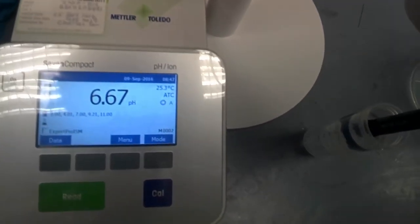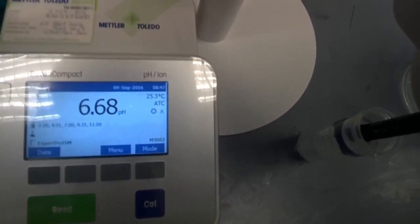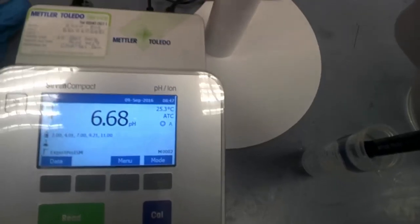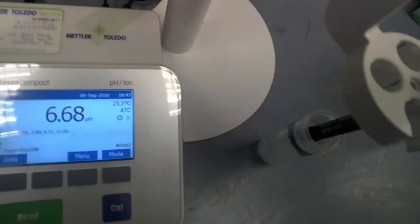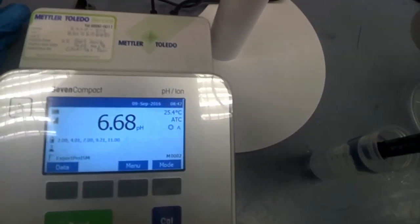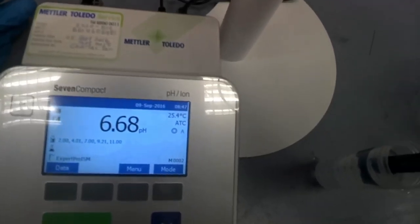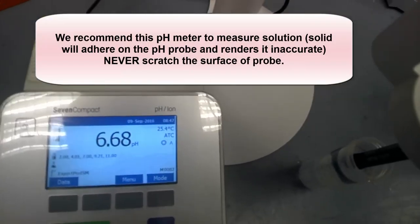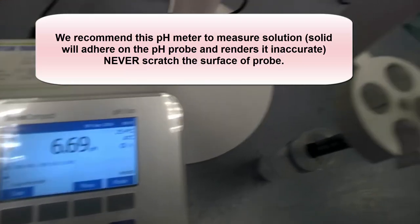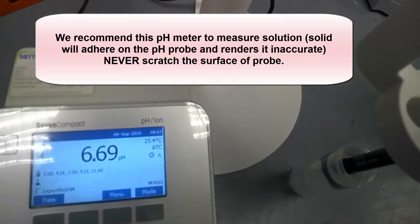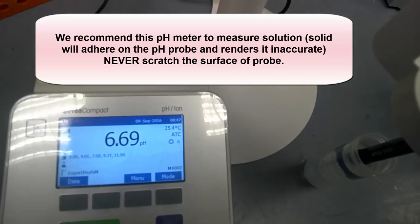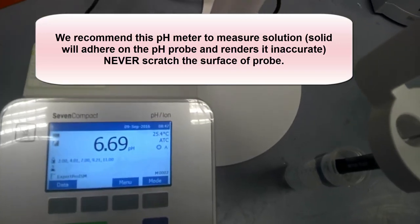This pH meter, try to use it for homogeneous solution. If you have some solid, it is recommended not to use it. Because you have some solid that stains on the exterior surface of the pH probe that can affect the reading. But let's say, unfortunately, you have noticed there's some solid on the surface of this pH probe. Please inform the engineer to record down in the logbook so that we know what to follow up for.